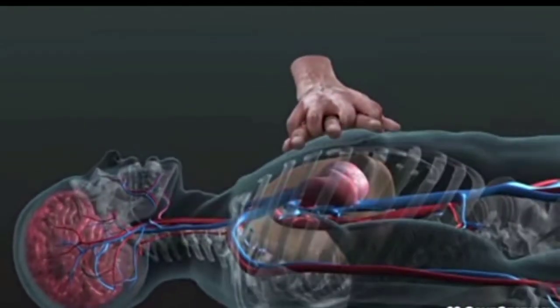Performing CPR accomplishes two critical things. One, compressions move oxygenated blood to the brain to keep the brain alive. And two, compressions keep blood and oxygen moving to the heart muscle itself, so that it has the best chance of resuming a normal electrical rhythm after a shock is delivered.